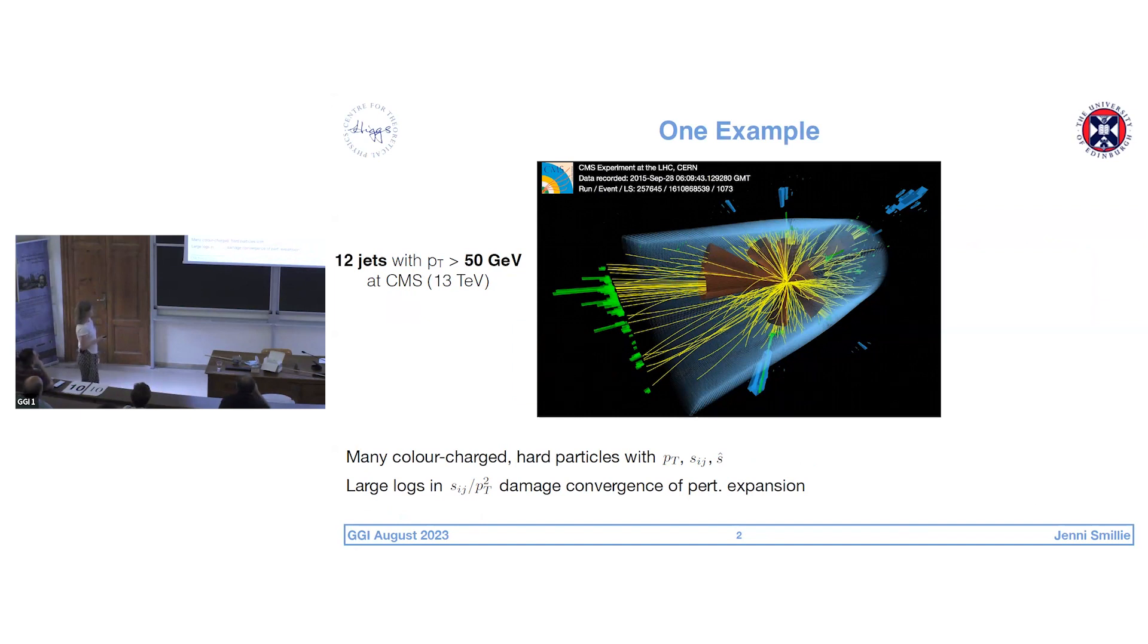Now, obviously, this is a bit of an exaggeration. It's a genuine CMS event. I didn't make it up, but it has 12 jets, each with transverse momentum above 50 GeV. So there's a lot going on here, but I put the numbers in bold because 12 jets is not really of immediate concern to most of us.